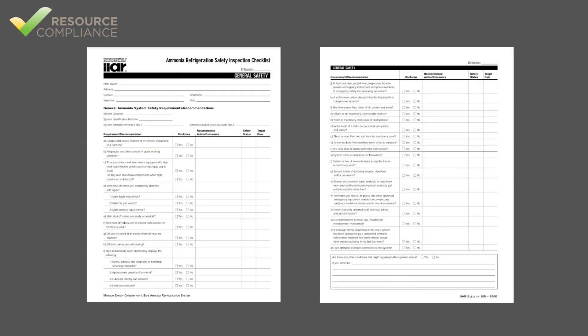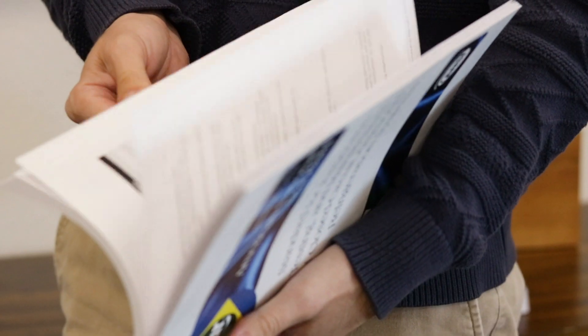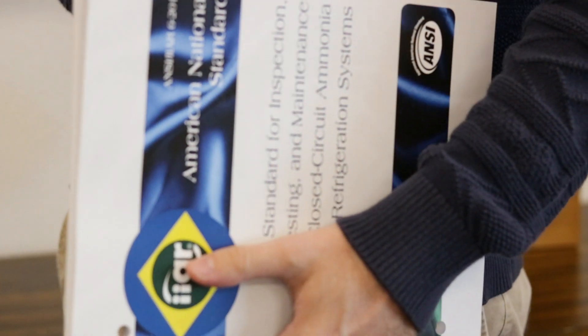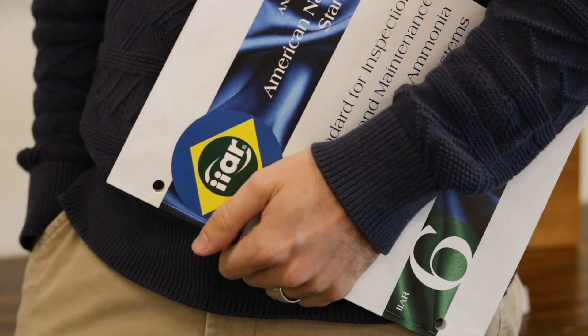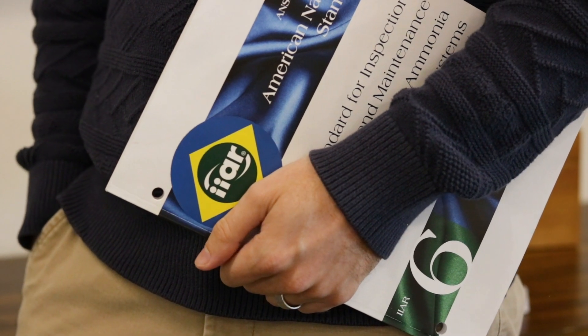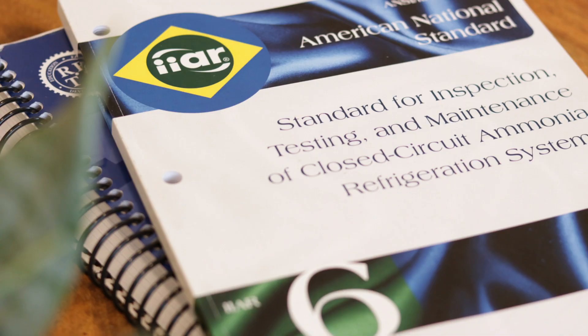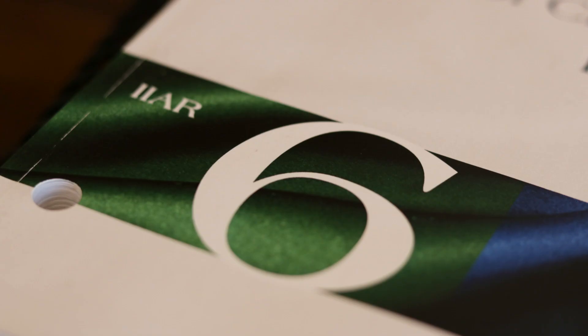In 2019, IIAR retired Bulletin 109 when the first edition of Standard 6 was published. Standard 6 addresses the minimum requirements for inspection, testing, and maintenance of ammonia refrigeration systems, and includes slightly altered versions of the B109s in Appendix B.